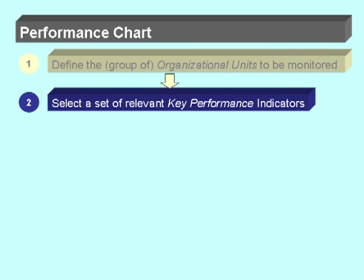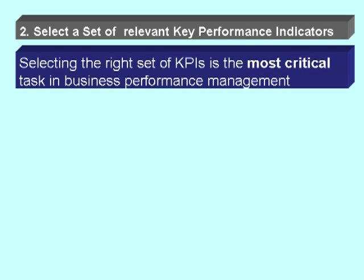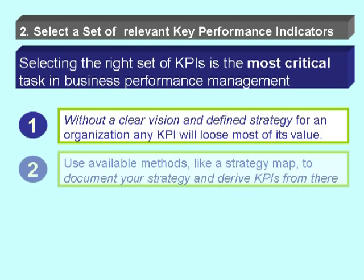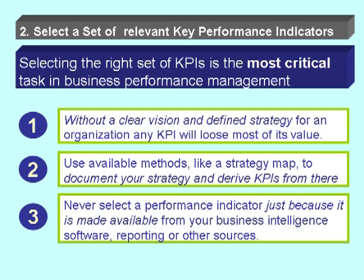In the second step, we need to select a set of relevant key performance indicators. Selecting the right set of KPIs is the most critical task in business performance management. Without a clear vision and defined strategy for an organization, any KPI will lose most of its value. We can use available methods like a strategy map to document the strategy and derive the KPIs from there.